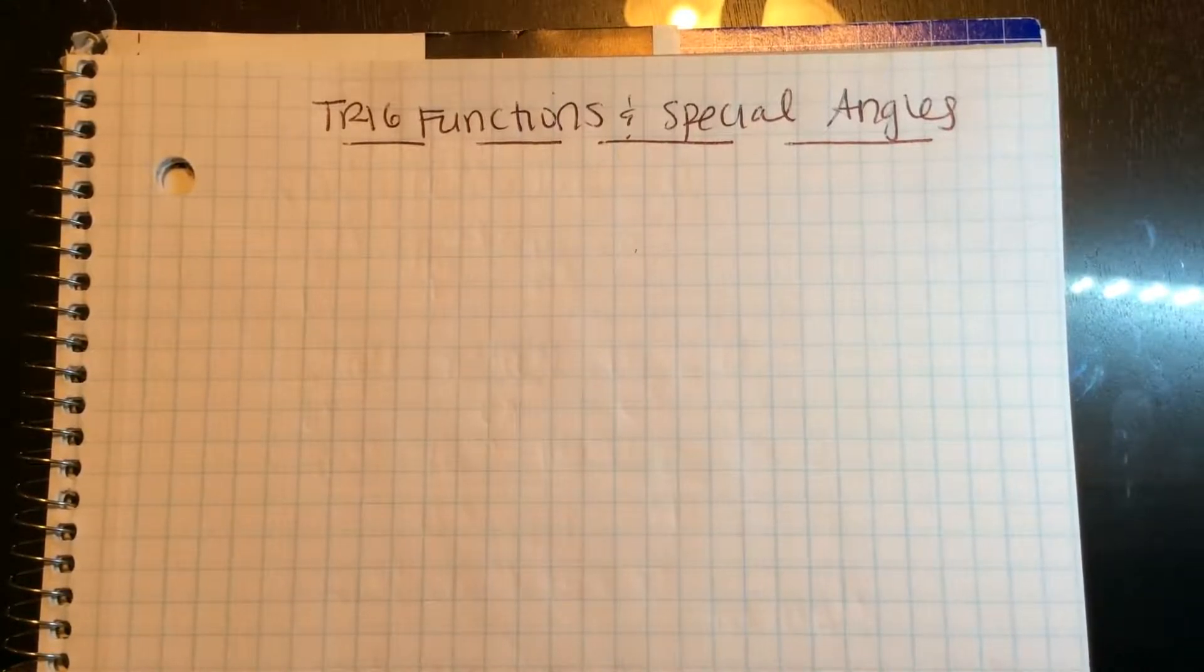Hey guys, so now we're on to the trig functions and special angles review page. We need to have memorized sine, cosine of 30, 60, and 45 degrees.